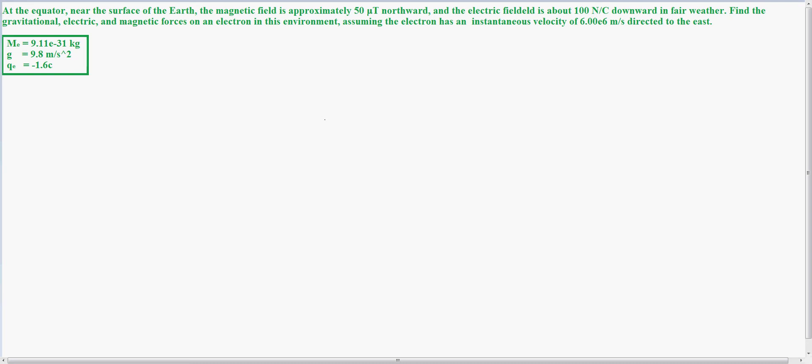Find the gravitational, electric, and magnetic forces on the electron in this environment, assuming the electron has an instantaneous velocity of 6 times 10 to the 6th meters per second directed eastward.